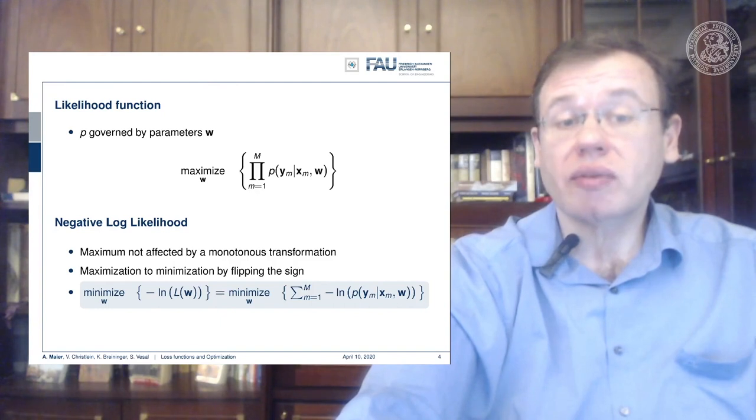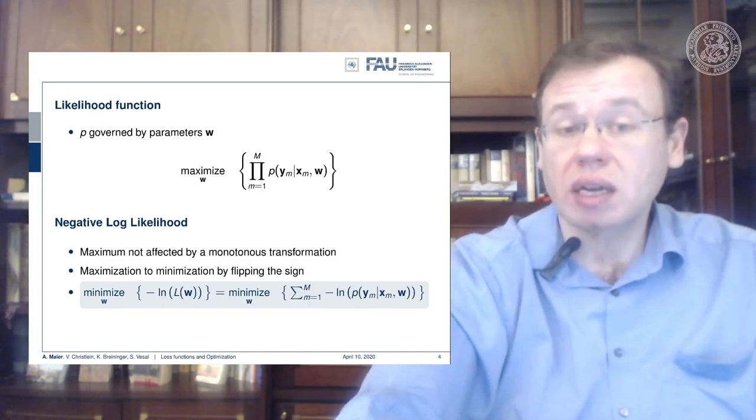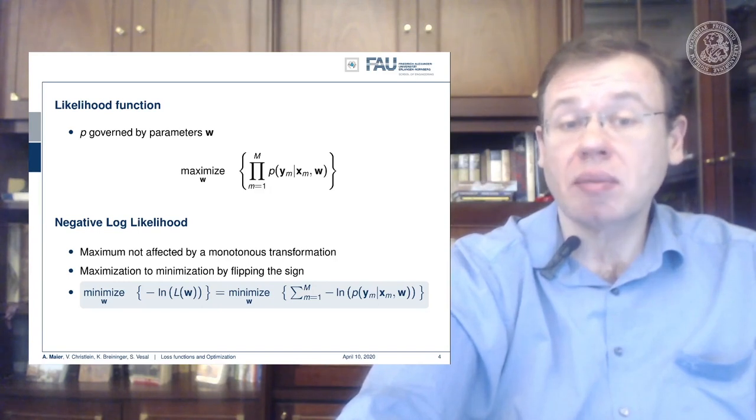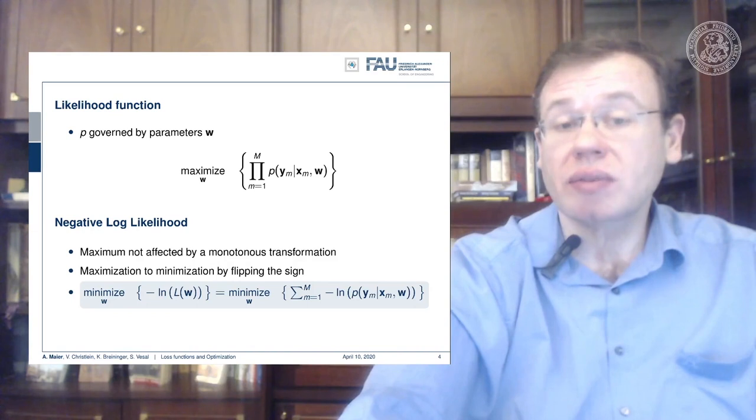We can use the log function and a negative sign and then flip the maximization into a minimization. We can show that this is equivalent: instead of looking at the likelihood function, we can look at the negative log likelihood function. Then our large product is suddenly a sum over all the observations times the negative logarithm of the conditional probabilities.